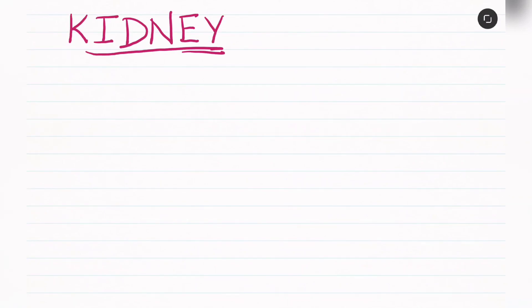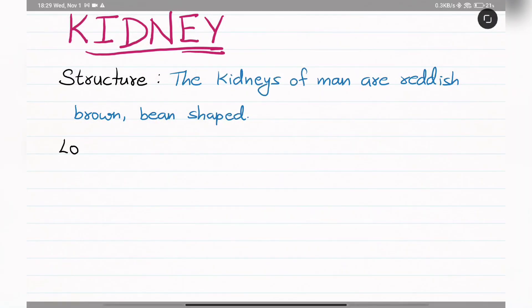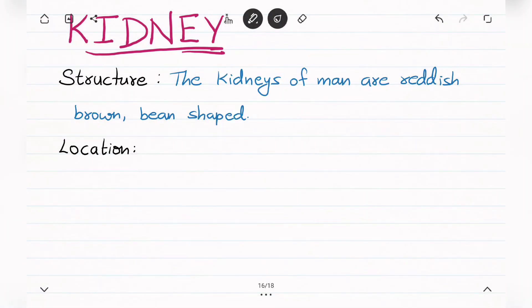Hello students, welcome to Educational Era. Today in this video we will talk about the structure, location, and function of kidneys. First, structure: The kidneys of man are reddish brown, bean-shaped.